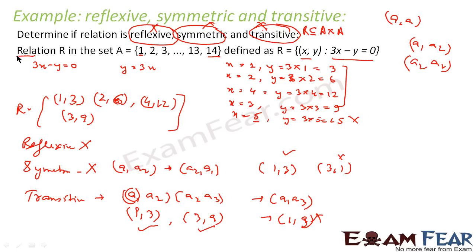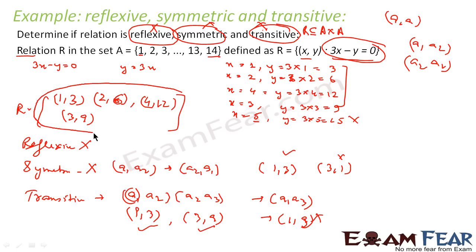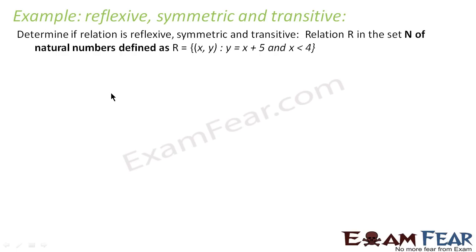So what is the approach we followed? The first thing we did was, based on the relation 3x minus y = 0 and the given set, we got the elements in this relation. Once we have the four elements in this relation, it is very easy to find whether the relation is reflexive, symmetric, and transitive. Let's take one more example.